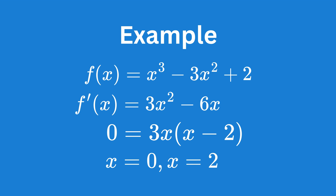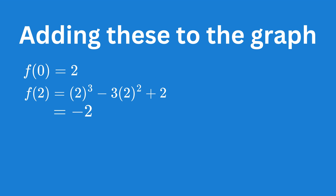Now that we have the x coordinates of the turning points, we can find the corresponding y coordinates by plugging these x values back into the original cubic function. For x equals zero, we have y equals two, and for x equals two, we have y equals minus two.